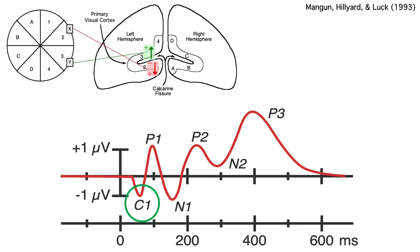We've already talked a little about the C1 wave, which comes from primary visual cortex and can be either positive or negative depending on whether the stimulus is in the lower or upper visual field. When it's positive, it merges together with the P1, so you don't usually see a distinct C1 unless the stimulus is in the upper visual field and the C1 is negative.